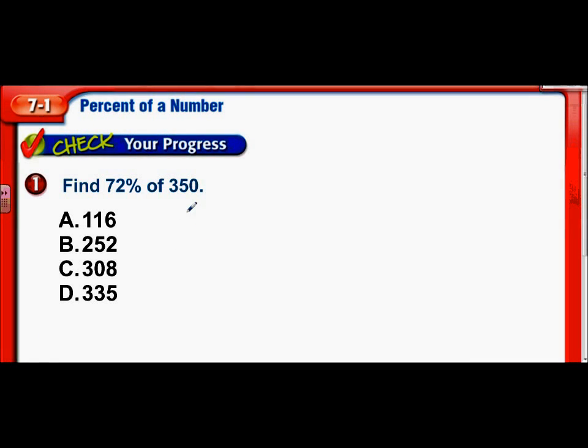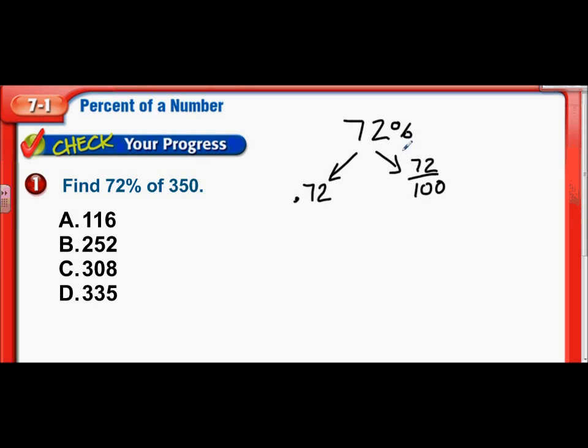Here we are. Find 72% of 350. Alright, so here we go. The two choices are, 72% could be one of two things. As a decimal, it'd be .72. As a fraction, that would be 72 over 100. Percents are out of 100. So, we don't have to deal with such a big number here, though. We could simplify this. How about we cut both of those numbers in half. That would be 36 over 50. Well, they're both still even, so let's cut them in half again. That would be 18 over 25. Alright, finally, we have a simplified fraction.